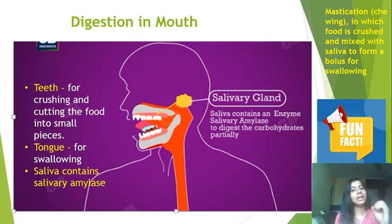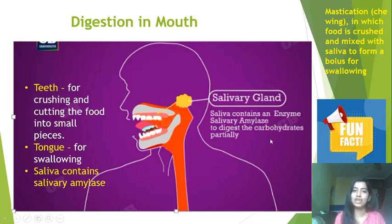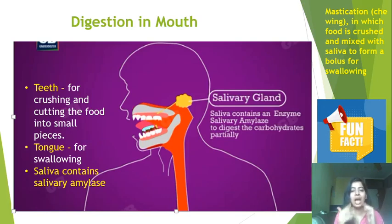Saliva also contains salivary amylase, which is an enzyme that converts starch into sugar. The salivary gland releases saliva which partially digests carbohydrates, specifically starch. To see whether salivary amylase works, you can try it right now: take a bite of chapati. The chapati contains carbohydrate — at first it will not taste sweet, but if you keep chewing it again and again, after some time it will start tasting sweeter.